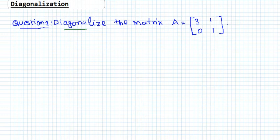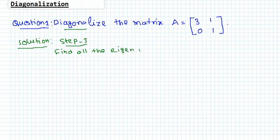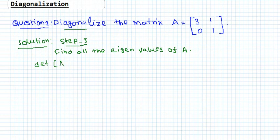So here is the solution procedure. Step 1: you have to find the eigenvalues of the matrix A. To find the eigenvalue, we have to find the determinant of the matrix A minus lambda times the identity matrix.